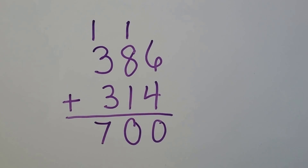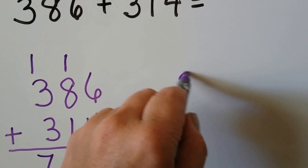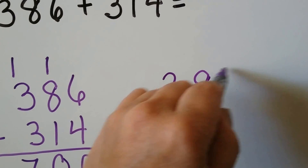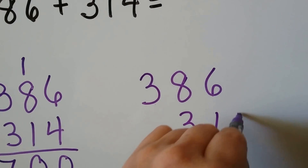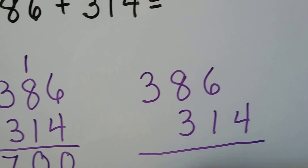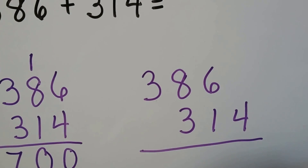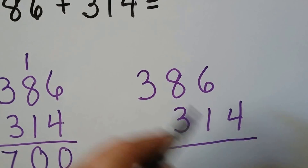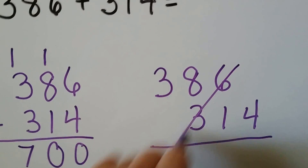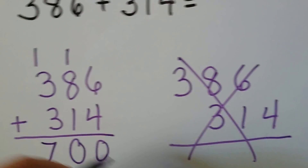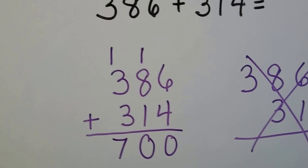And it's really important to keep your columns straight. What if I did this — see, it would be hard to add it, wouldn't it? It's like it's all in the wrong place. So you want to make sure that you have all your columns lined up nice and straight. Nice and pretty.